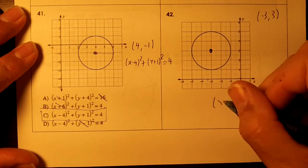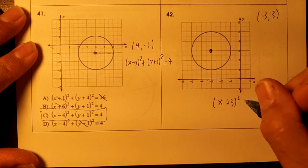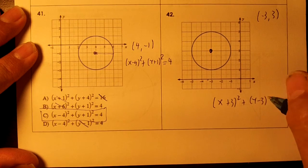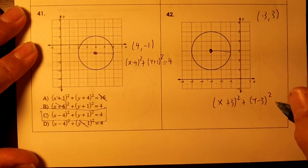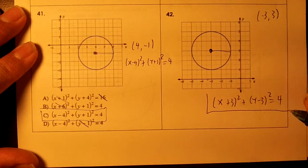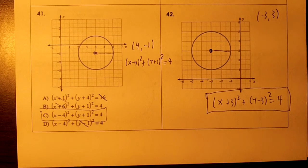So our x parentheses would be x plus 3 squared, plus y minus 3 squared, and the radius is 2 again, equal 4. That would be my formula. Simple, simple stuff.